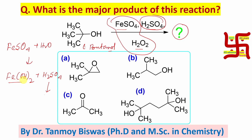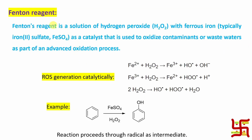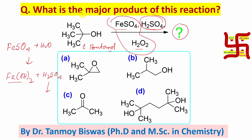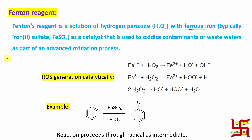Let's learn a little bit about the reagent — Fenton's reagent. Fenton's reagent is a solution of hydrogen peroxide with ferrous iron (Fe²⁺), which is typically supplied in the form of iron sulfate. Iron sulfate heptahydrate (FeSO₄·7H₂O) is actually utilized — not only iron sulfate but the 7 waters of crystallization should be present. This is called green vitriol.